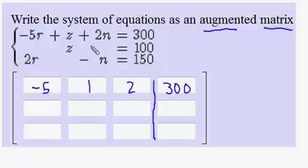Notice in my second equation there seems to be two variables missing. Because there is no r, you can think of that as zero r. So my first number would be zero. Then you're adding one z, so you have a positive one in this entry.